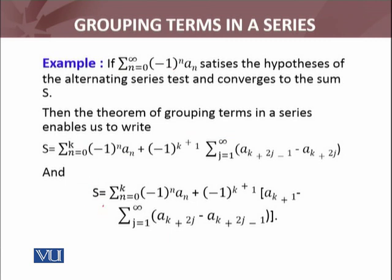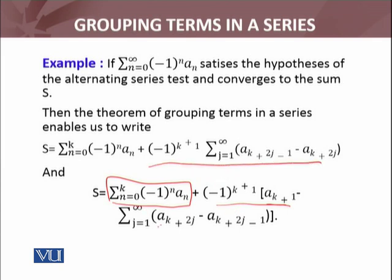Similarly, I can form another grouping: the same series as n equals 0 to infinity, with the first group summed from 0 to k, then minus 1 raised to power k plus 1, minus summation j equals 1 to infinity of a_{k+2j} minus a_{k+2j minus 1}. The index has been changed in the same way as the first grouping — you can verify this yourself.